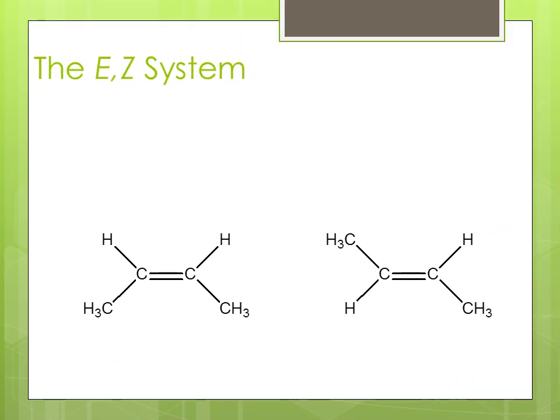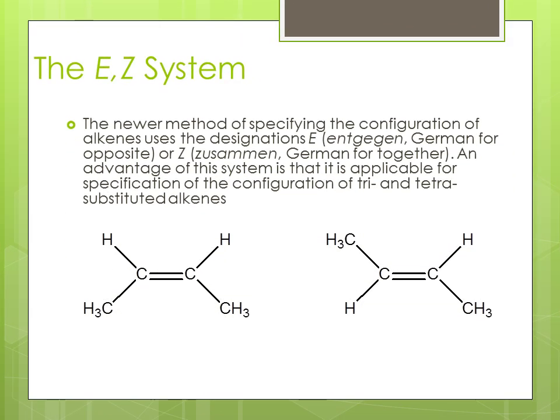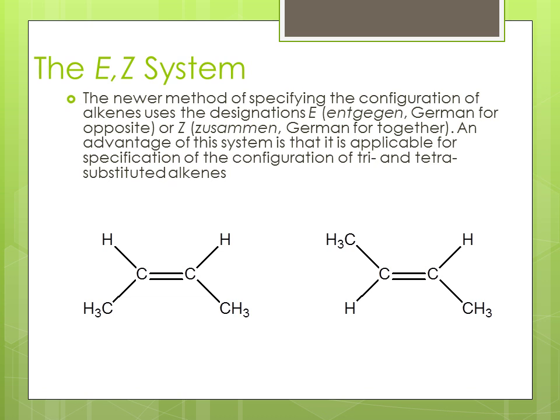The E-Z system. The newer method of specifying the configuration of alkenes uses the designation E for entgegen, German for opposite, or Z, zusammen, German for together. An advantage of this system is that it is applicable for specification of the configuration of tri- and tetra-substituted alkenes.